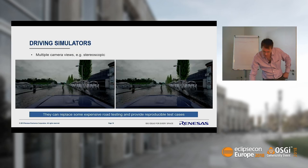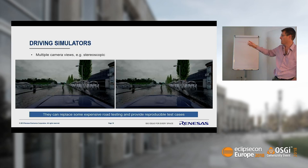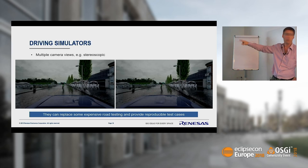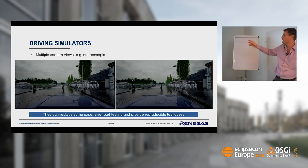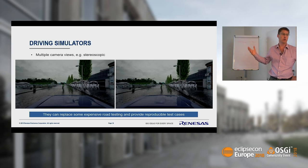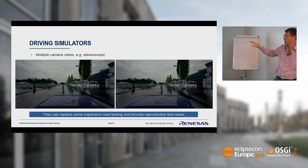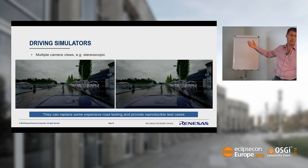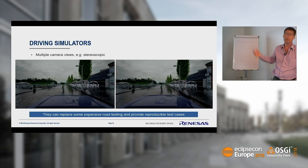Another thing you can do with these simulators is use multiple cameras — two, eight, whatever you like. A snapshot shows stereoscopic images where you can see a pedestrian offset between left and right images. These simulators also feature environmental modeling: you can test how algorithms perform in rain, overcast conditions, or darkness. Normally you'd need lots of photographs or expensive road testing; with a simulator you can replace all that with reproducible, cheap test cases.